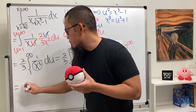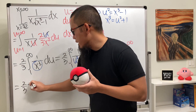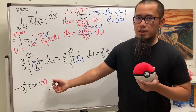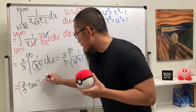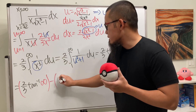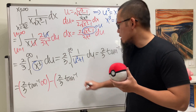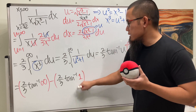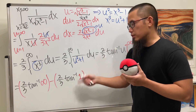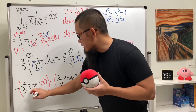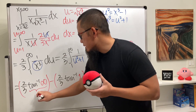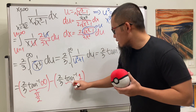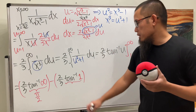Plugging in the limits — taking the limit as u → ∞ gives 2/3 times arctan(∞), minus the second part, 2/3 times arctan(1). We know that arctan(∞) = π/2 and arctan(1) = π/4.